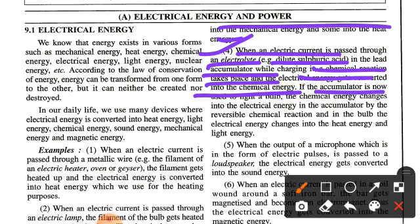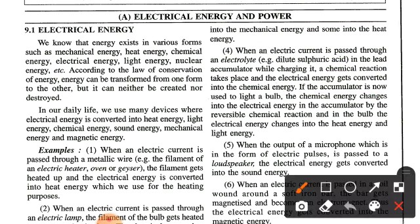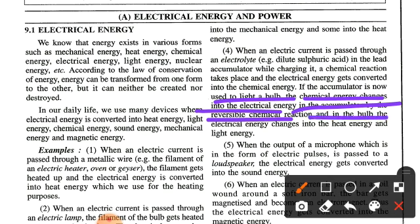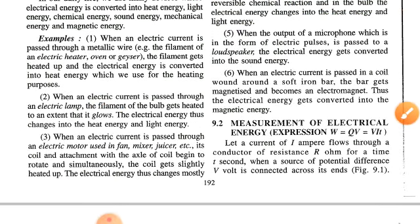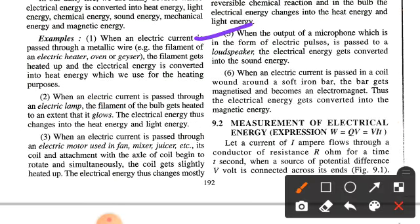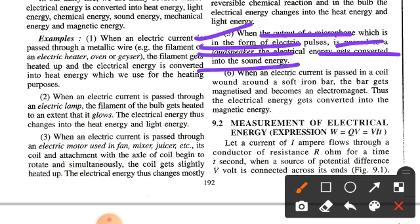The fourth example: when an electric current is passed through an electrolyte like dilute sulfuric acid in a lead accumulator while charging, a chemical reaction takes place and the electrical energy gets converted into chemical energy. When the accumulator is used to light a bulb, the chemical energy changes back into electrical energy by a reversible chemical reaction, and in the bulb the electrical energy changes into heat and light energy.